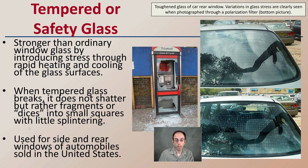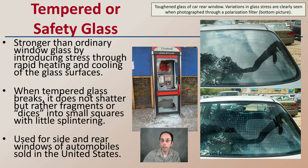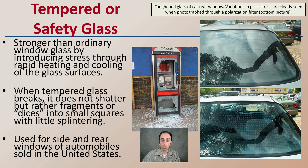We also have tempered or safety glass. This is stronger than ordinary glass by introducing stresses through rapid heating and cooling of the glass surface. When tempered glass breaks, it doesn't shatter but rather fragments or dices into small squares with little splintering. It's used for side and rear windows in automobiles sold in the United States. If you look through a polarizing lens or tilt your head while wearing sunglasses, you can see that tempered look, particularly on the rear car window.